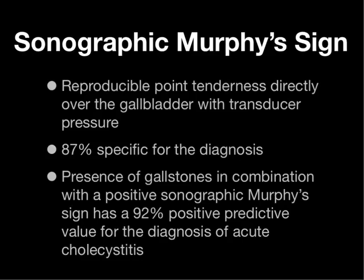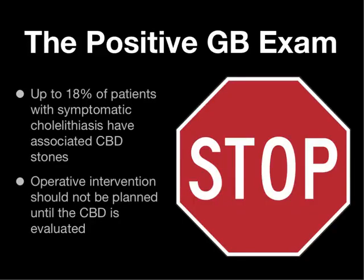Let me clarify the sonographic Murphy sign. By definition, it's reproducible point tenderness directly over the gallbladder with transducer pressure. It's 87% specific for the diagnosis of cholecystitis, and the presence of gallstones in combination with a positive sonographic Murphy sign has a 92% positive predictive value for the diagnosis of acute cholecystitis. But it really has to be reproducible point tenderness, not global tenderness over the right upper quadrant — point tenderness directly over the gallbladder. If you do find gallstones with focal tenderness, remember that up to 18% of these patients will also have associated CBD stones, and therefore operative intervention should not be planned until you have a comprehensive exam where the common bile duct is evaluated.